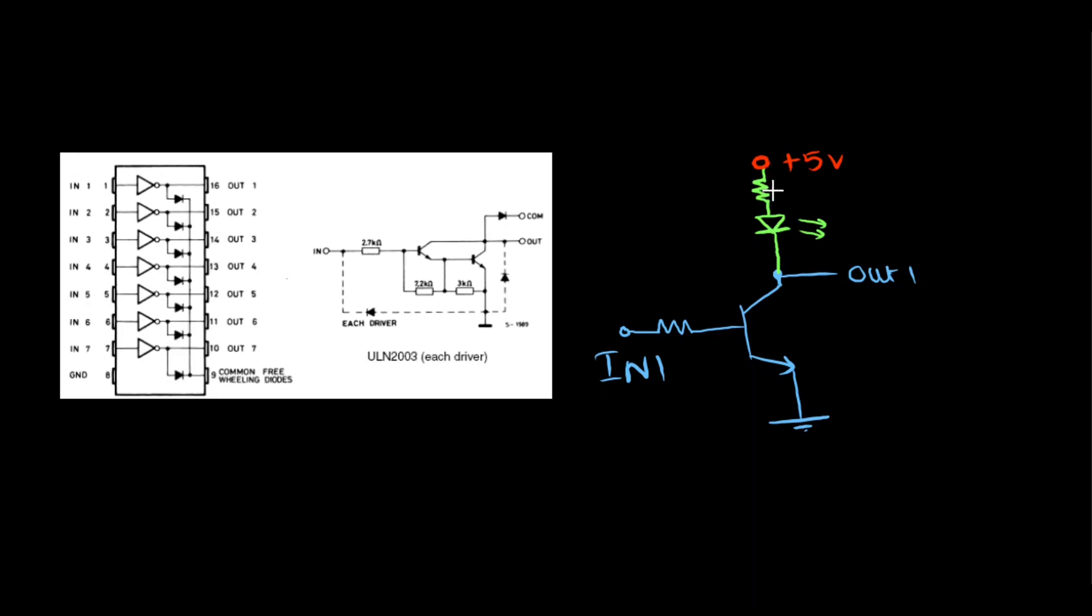In order to use this transistor as a switch, we need to connect 5 volts, resistor, and an LED to the collector as shown here. What we are going to do now is we'll use one driver in the ULN2003 and then connect this 5 volts, resistor, and the LED to it and let's operate it from our PryoGeek Uno app.